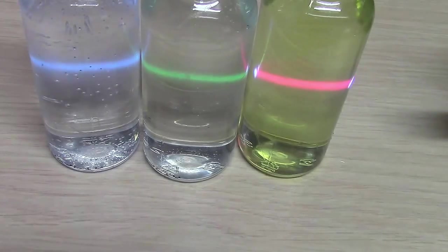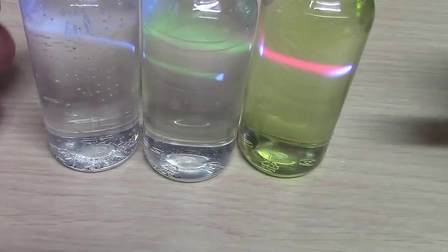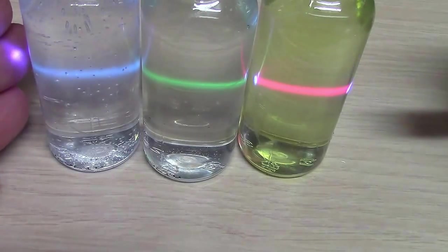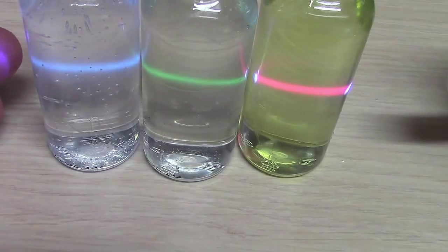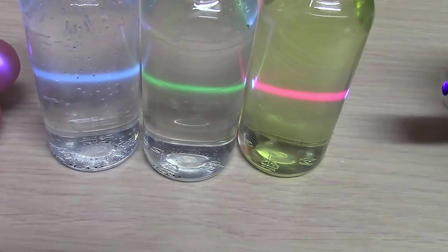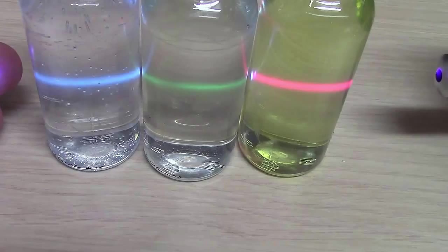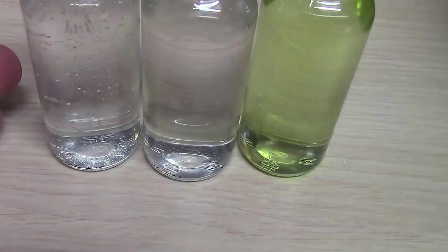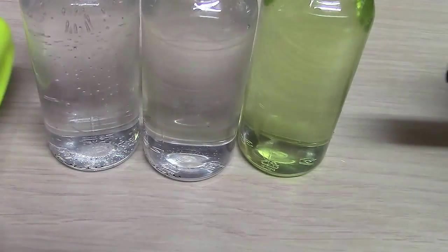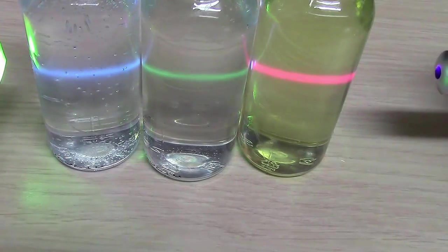So you get these three beautiful colors from just UV light. The UV light is passing all the way through. You can see it hitting my hand there on the end. So it's passing through these three bottles, converting UV light into red, green, and blue.